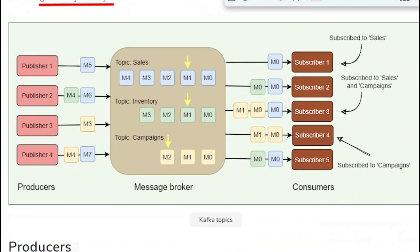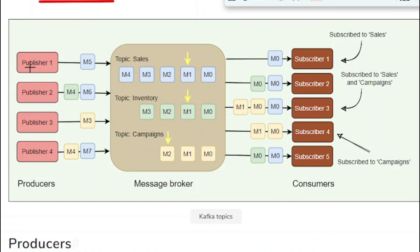Looking at this diagram of Kafka topics, there are multiple publishers — publisher 1, 2, 3, 4 — all publishing messages to the Kafka broker. The messages are then sent to the consumers who subscribed to a particular topic. You can see there are three topics in the Kafka broker: sales, inventory, and campaign. Subscriber 1 subscribed to the sales topic will only receive messages from sales, and will not receive any messages from inventory or campaign.